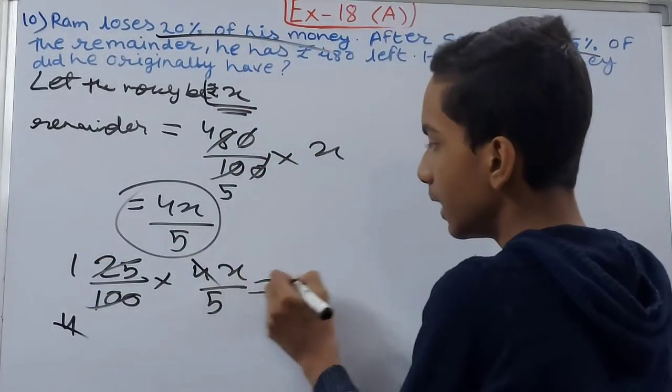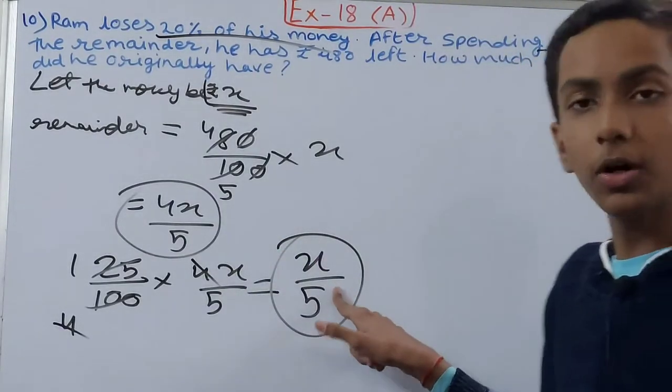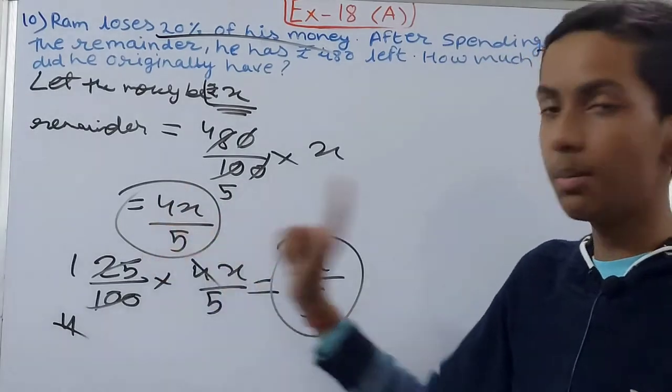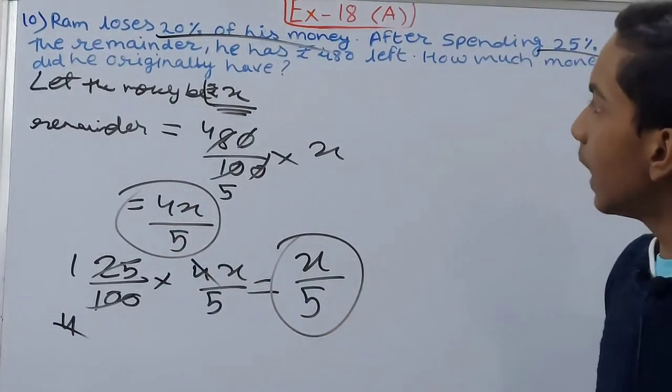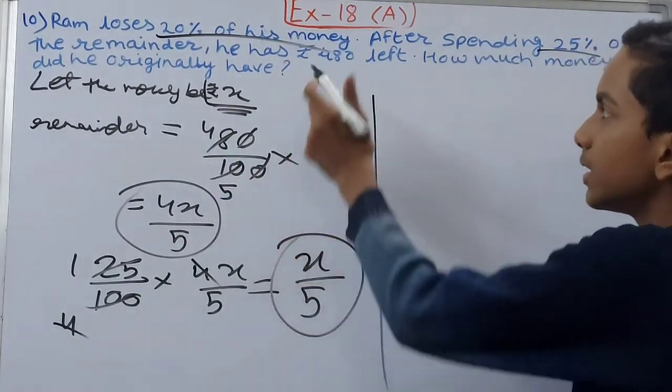1 and 4, cut this 4, cut this 4. So he had rupees x upon 5. This much was what he spent out of the remainder.